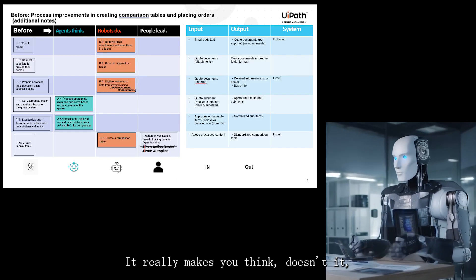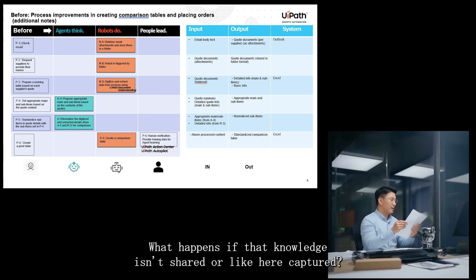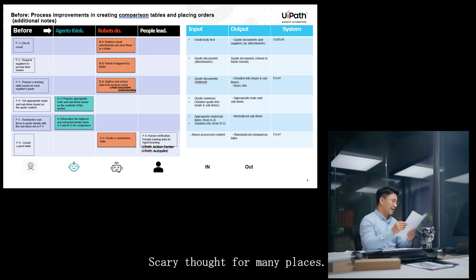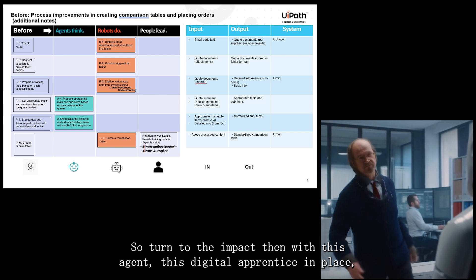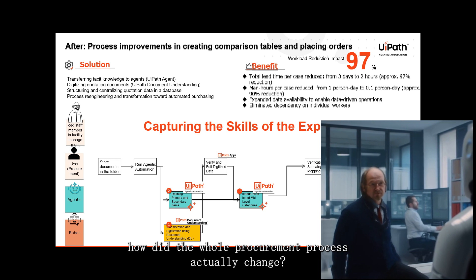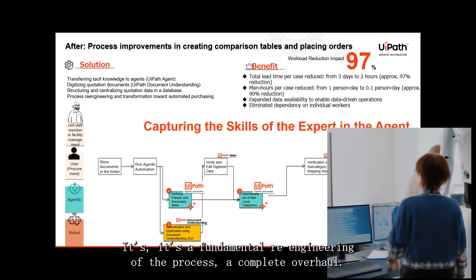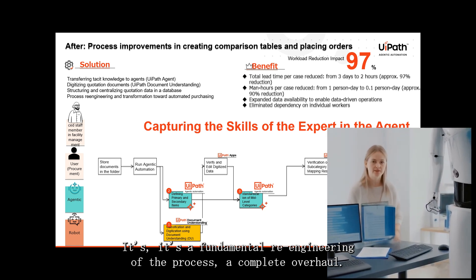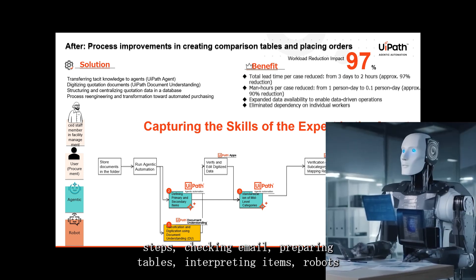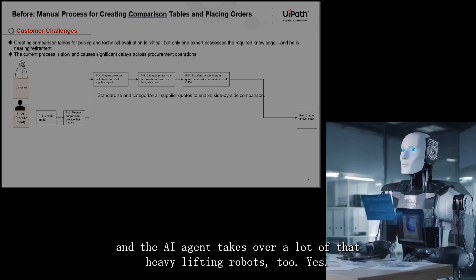It really makes you think about all those hidden pockets of expertise in organizations — people like Sarah holding things together. What happens if that knowledge isn't shared or captured? So what does the new workflow look like day to day? It's a fundamental re-engineering of the process. Instead of Sarah doing all those manual, human-intensive steps, robots and the AI agent take over a lot of that heavy lifting.